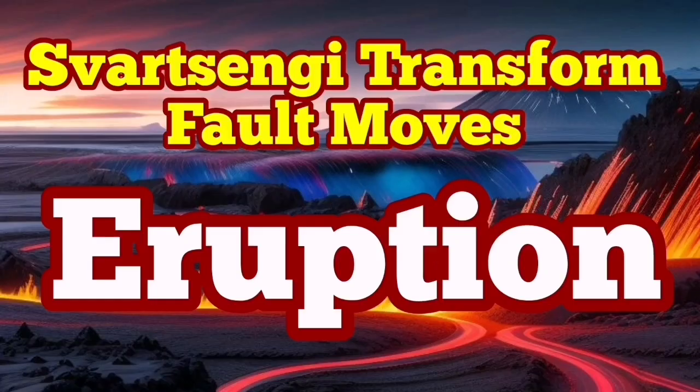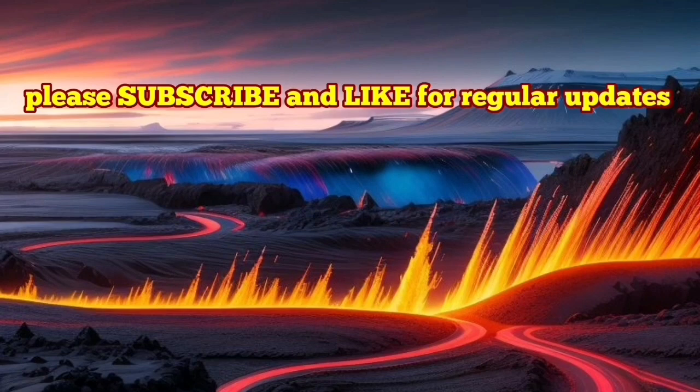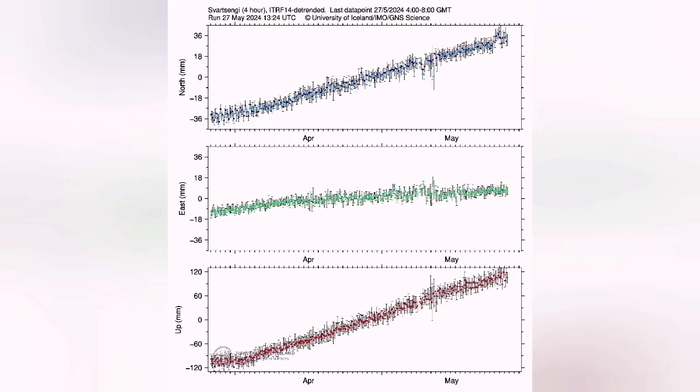Our GPS data shows now that we have around 20 million cubic meters of magma under the Svartsengí volcanic system accumulated. This is based on this chart on the lower part. But the north-south one also shows something strange.